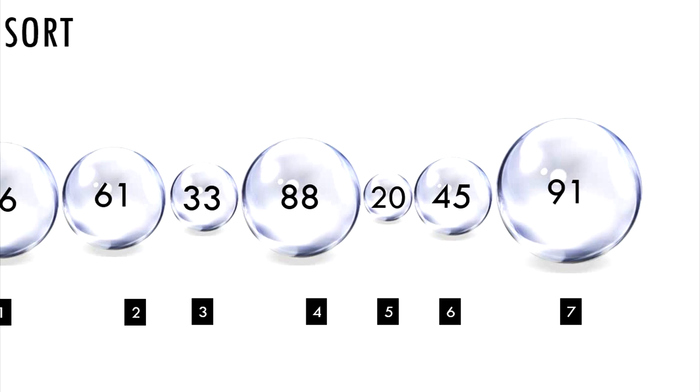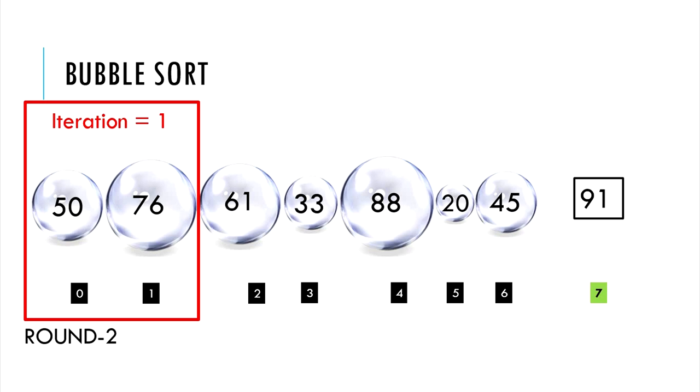Now we move on to round 2. The first iteration begins with first and the second element comparison. Is swapping necessary? No. So let's move on.